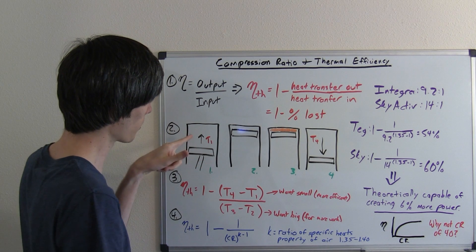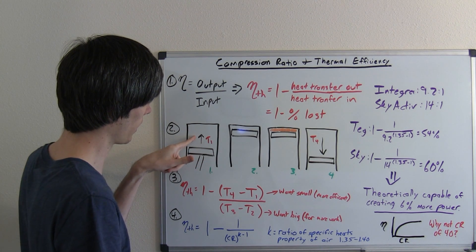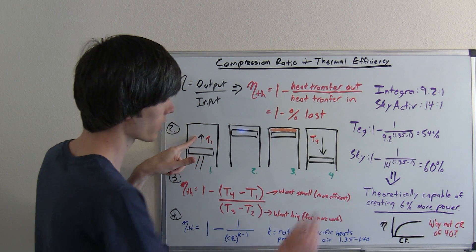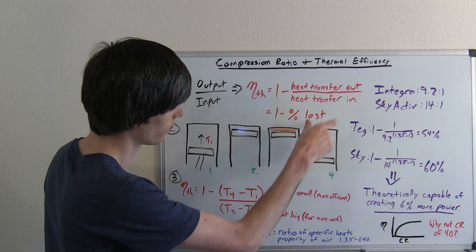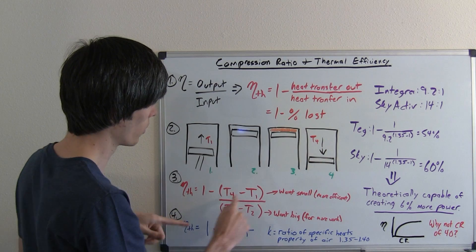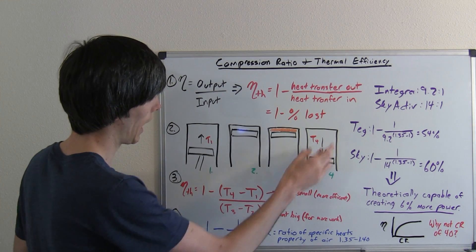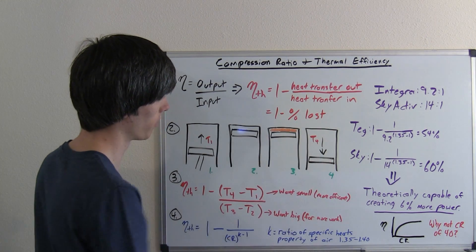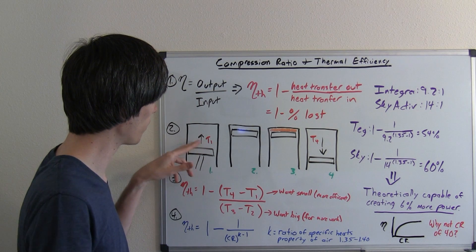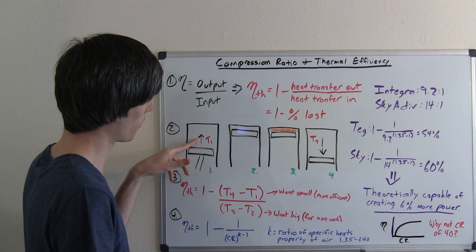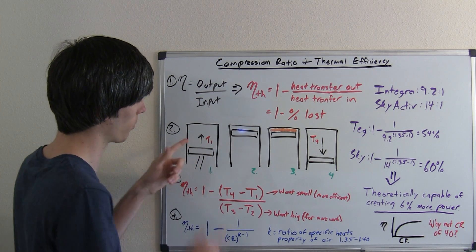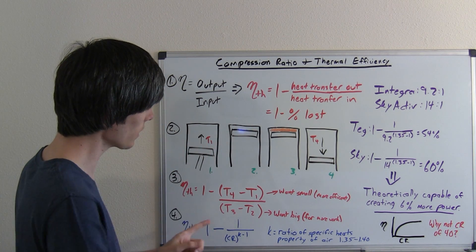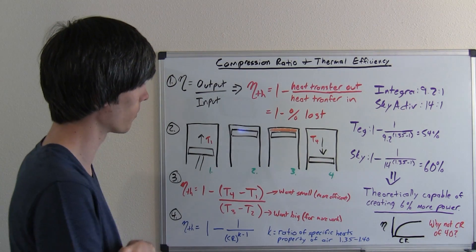So the temperature of the air in this compression stroke and the temperature of the air in this power stroke. So the power stroke temperature after the power stroke is complete, once the piston is all the way down, minus the temperature of the compression stroke, the air fuel mixture before the piston moves up. That's going to be this top part of the equation, the heat transfer out.